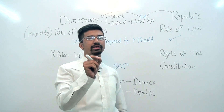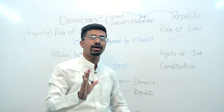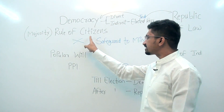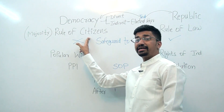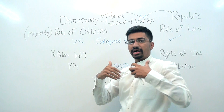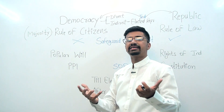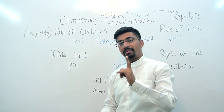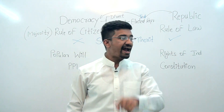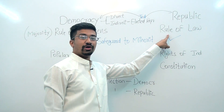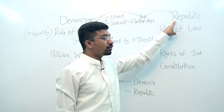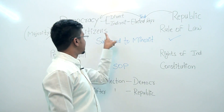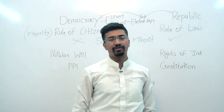Friends, rule of law means the law of the land. Even if a majority government comes to power — elected by the majority of people — they still have to abide by the rule of law. That is what republican form of government means, and that is what the democratic form of government operates within.